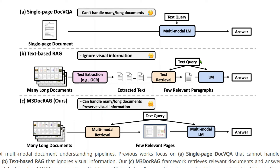With standard text RAG, once we put in a text query, it goes through a retrieval mechanism after being converted to embeddings, and a few relevant paragraphs are fetched from the extracted text. These pass through a language model, which gives out the answer. Pretty cool — but that's only cool for text-based things. It ignores the visual information altogether.